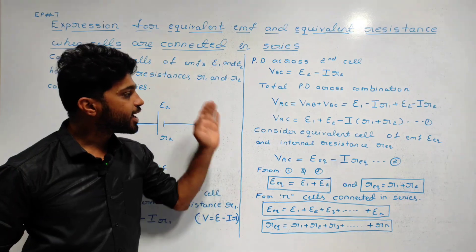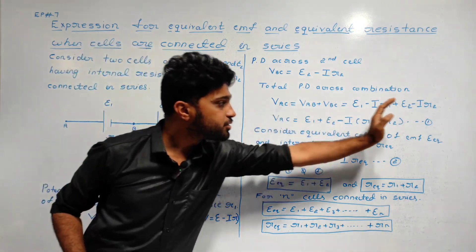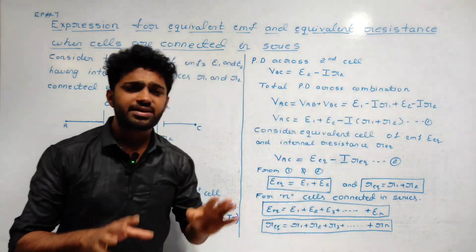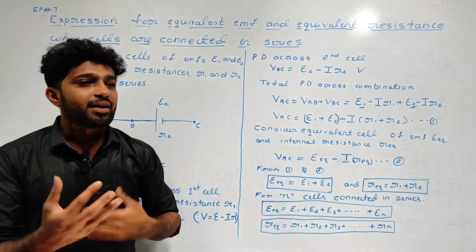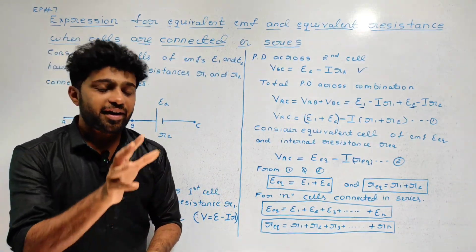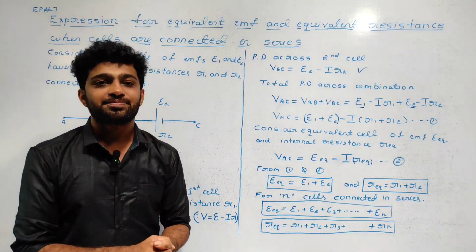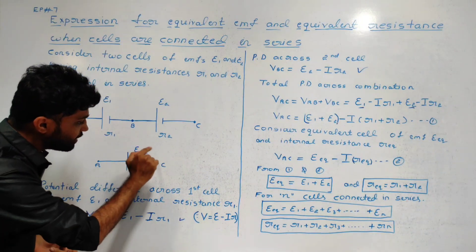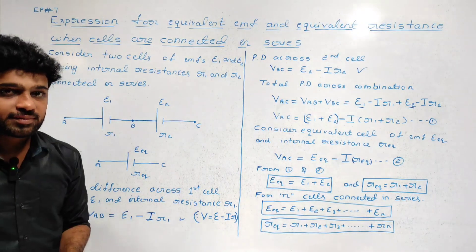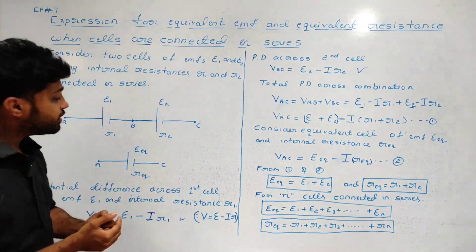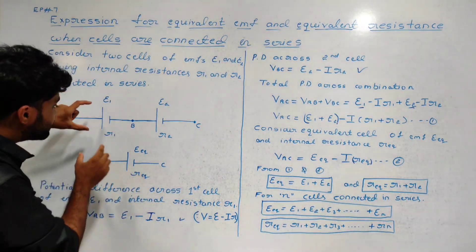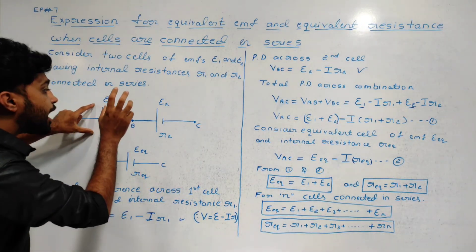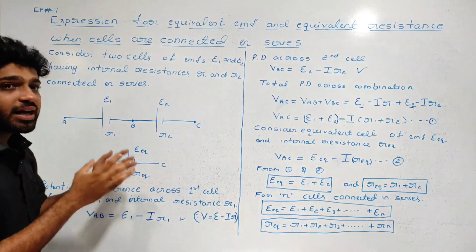Is it clear? Yes, it is clear. That is equation number 1. Easy. Next is the equivalent cell. The equivalent cell is equal to cell 1 and cell 2 combined.